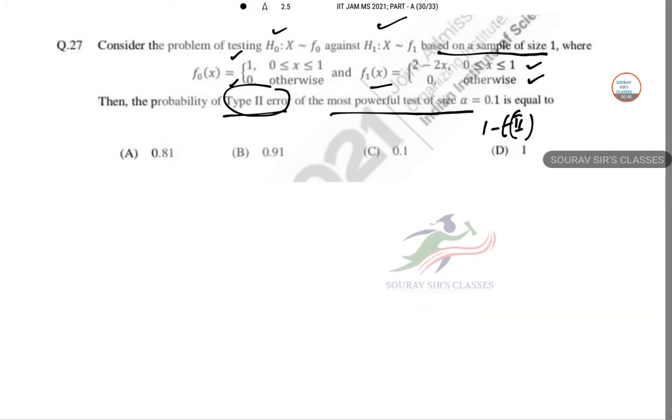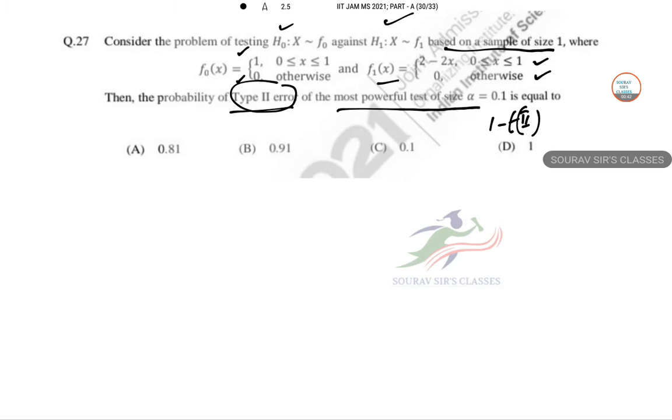Fx is given, so for type 2 error, by Neumann-Pearson lemma, F1 by F0 greater than K, which is 2 minus 2x by 1 greater than K.